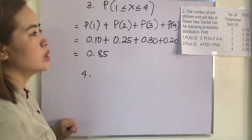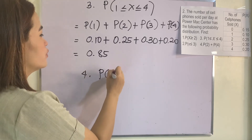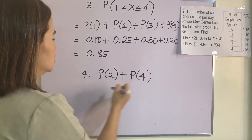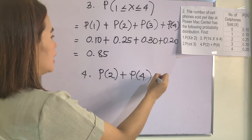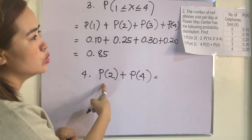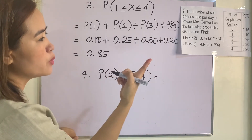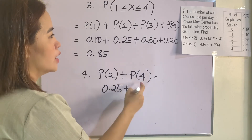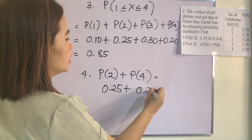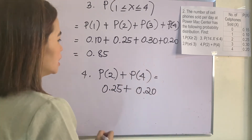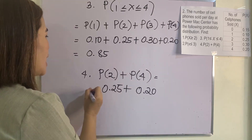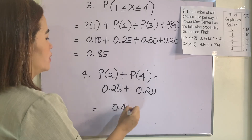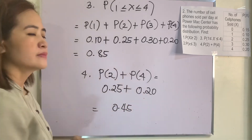For number 4, P(2) + P(4): we simply add the probabilities for X = 2 and X = 4. P(2) = 0.25 and P(4) = 0.20, so P(2) + P(4) = 0.45. That's it!